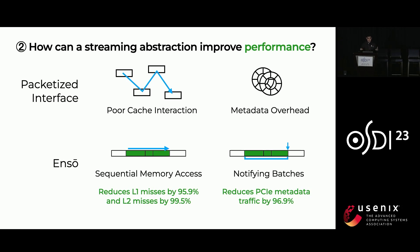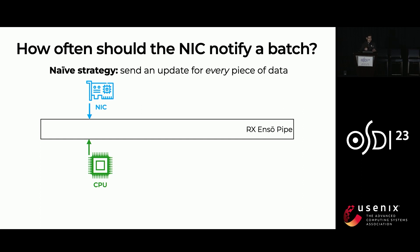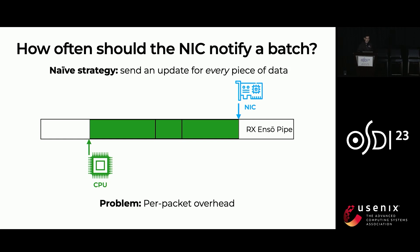In order to deliver on these performance promises, there are design challenges to address. The first is how often the NIC should notify each batch. Naively, you may have the NIC send a new update for every packet enqueued in the ANSO pipe by advancing the pointer. But the problem is that this reintroduces the per-packet overheads we're trying to avoid, because every one of these updates is metadata sent over PCIe and incurs CPU cycles processing these updates. So ideally, you want to balance these updates so they're not too fast, causing a lot of overhead, but also not too slow, causing the application to wait for packets that are already there.